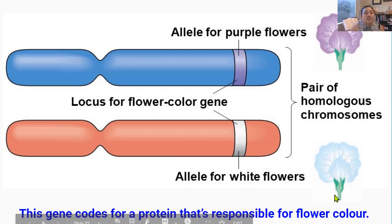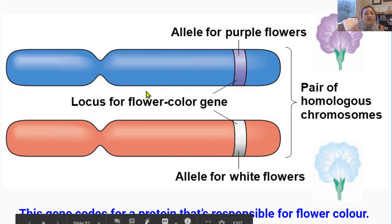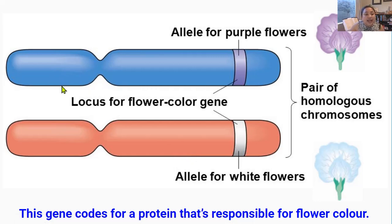This picture shows the relationship between homologous chromosomes, genes, and alleles. Here we see a homologous pair of chromosomes for a flowering plant species — they're the same length and contain the same gene at the same locus. This gene is responsible for flower color, and you can see it is located on the same spot on each chromosome. The flower color gene has two alleles: the allele for purple flowers and the allele for white flowers, though this picture doesn't tell us which allele is dominant and which is recessive.